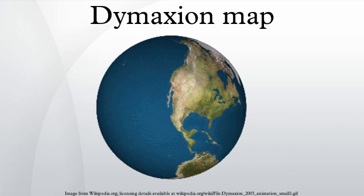The World Game, a collaborative simulation game in which players attempt to solve world problems, is played on a 70 by 35 foot Dimitian map. In 2013, to commemorate the 70th anniversary of the publication of the Dimitian map in Life magazine, the Buckminster Fuller Institute announced a competition for graphic designers and visual artists to reimagine the Dimitian map. The competition received over 300 entries from 42 countries.